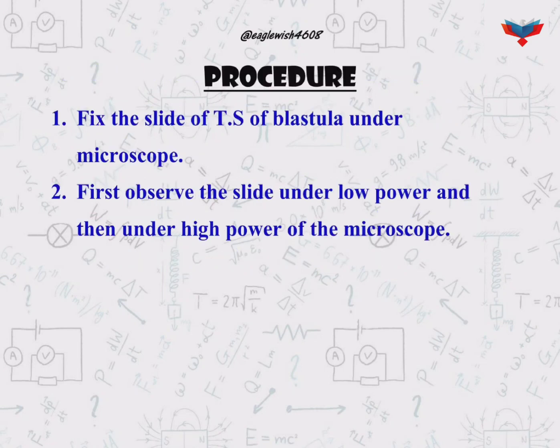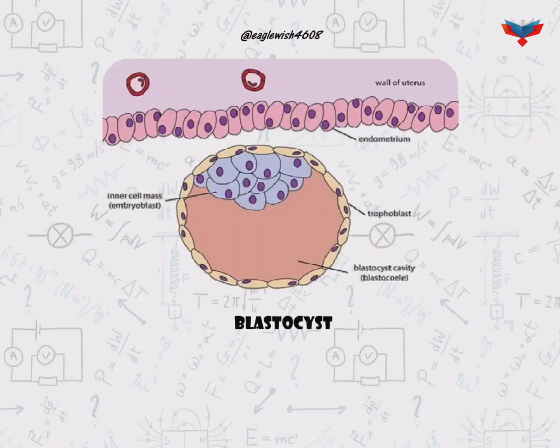In the procedure section we will write the steps to observe blastula under the microscope. The diagram hereby shows how blastula appears under the microscope.